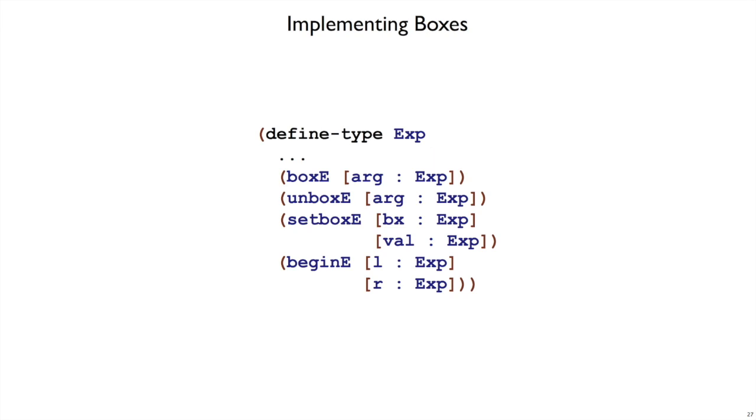That means we have four new forms in our exp data type, boxE, unboxE, setBoxE, and beginE. They all have arbitrary expressions as the sub-expressions. When you unbox, for example, you might call a function to go get a box, or you might get a box out of a box. It can be anything. So we allow an arbitrary expression there. That expression should produce a box value that unbox will unbox, and so on.